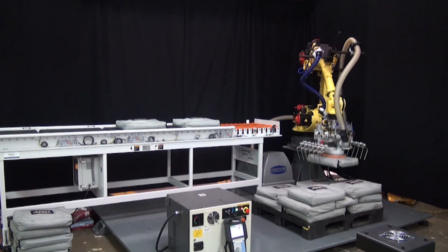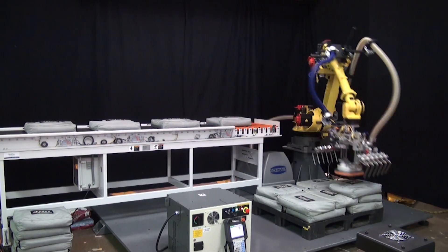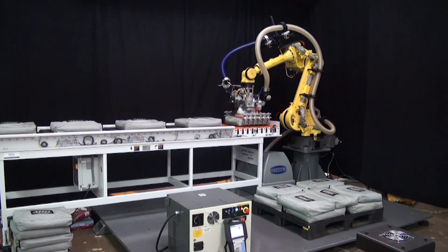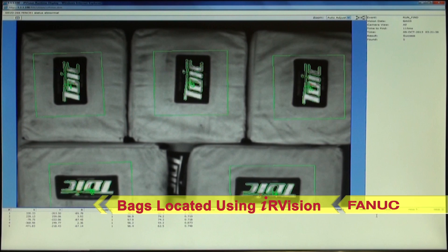Once all of the bags in the first layer have been depalletized, the robot uses FANUC IR Vision to locate the bags on the pallet and proceeds to palletize the layer of bags back onto the pallet, and the process repeats.